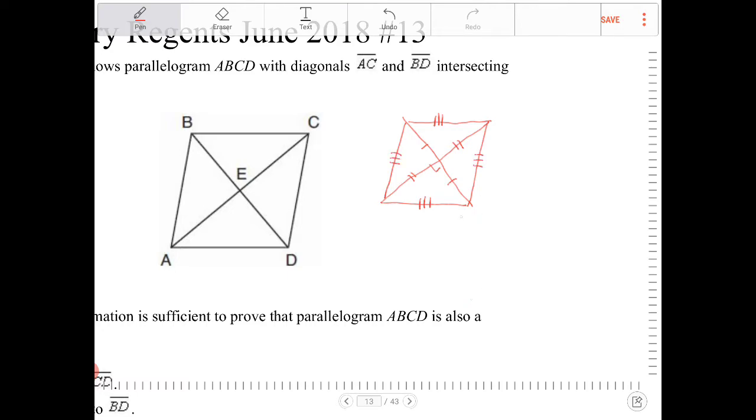And then the third fact that makes a parallelogram a rhombus is that all the angles are bisected by the diagonals.